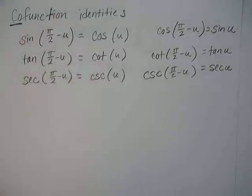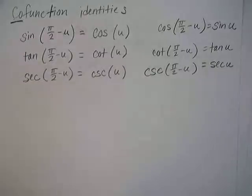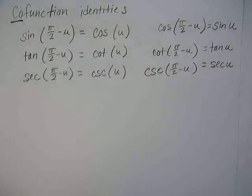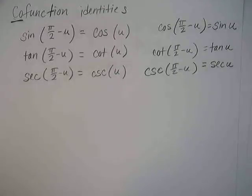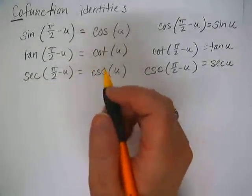So just remember pi halves is your 90 degrees. So if you have an angle and you take 90 minus that angle, you're finding the complementary angle. The co-function is the same as the function of that complementary angle. Does that make as much sense? Does that as clear as mud, basically? Doesn't make sense.